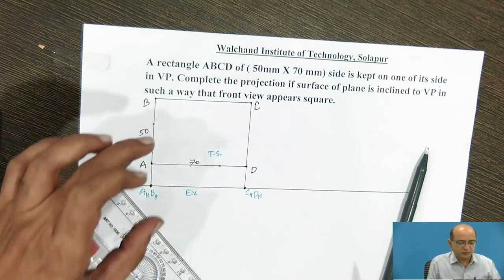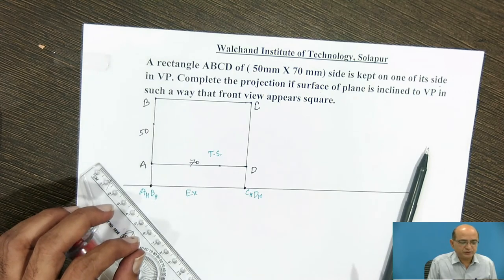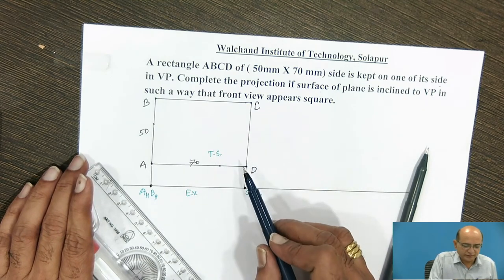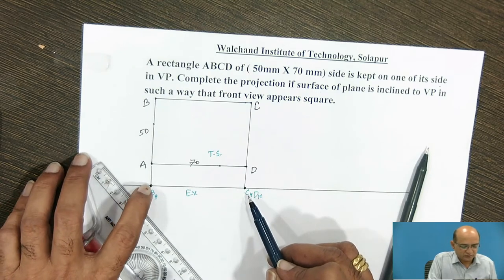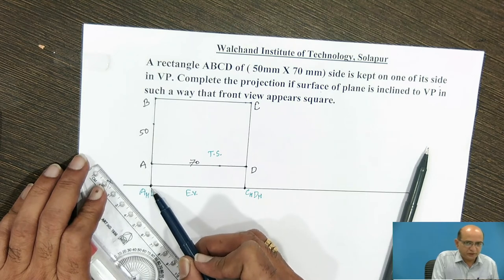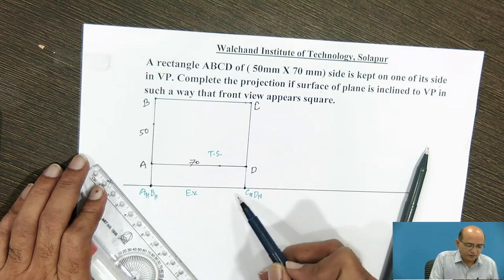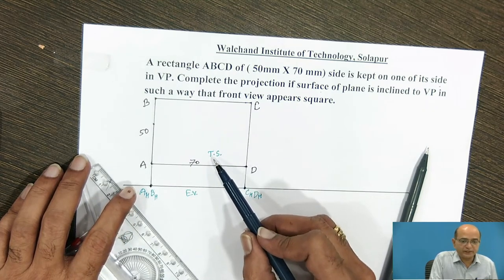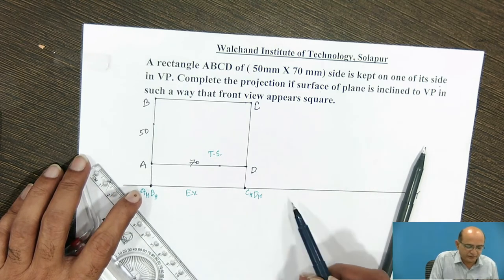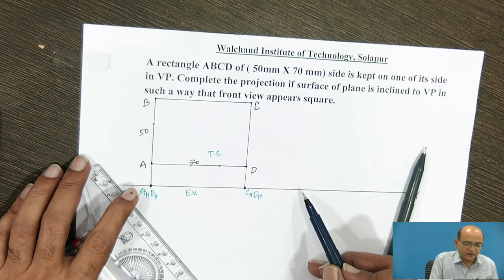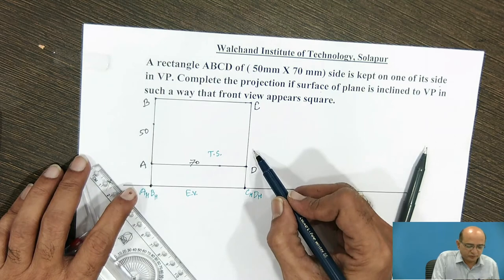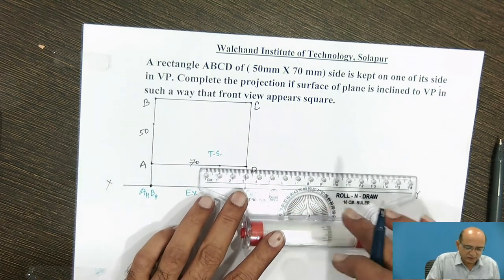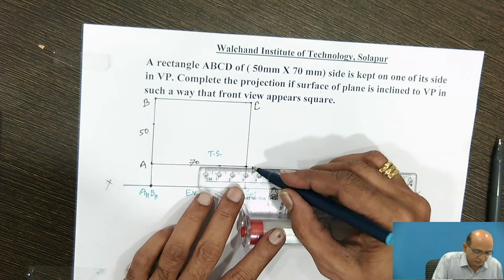The plane angle is not given; rather, the plane shape is given in the question as a square. In the second stage, when we consider the rotation of this rectangular plane by resting one of the smaller sides — that is AB — on the vertical plane, we have to determine where to shift the position of the C edge such that a square is obtained. Since the angle is not given, we cannot draw a line at a certain angle; we have to proceed in a different way and complete the second stage as a square by considering the shifting.